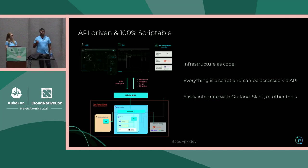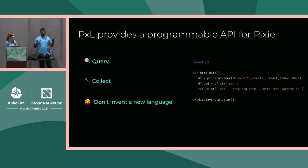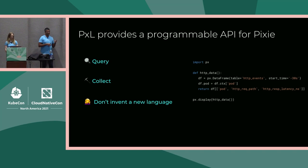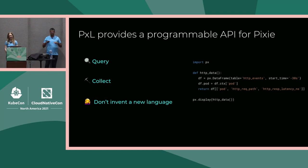We'll talk in more detail about PxL, which is Pixie's language that provides the capability of building these data science-like tools. We had three principles when thinking about what PxL would be. First, we wanted to be able to query data and build workflows. Second, we wanted to automate data collection we didn't think about a priori. Third, we really did not want to invent a new language, because everyone who starts inventing a new language finds it gets very complex for users.